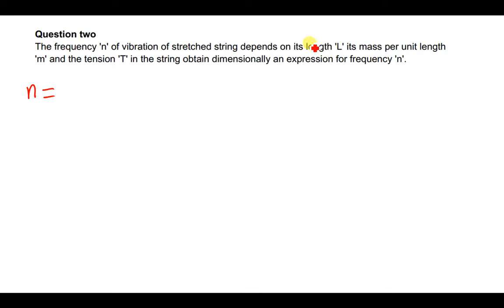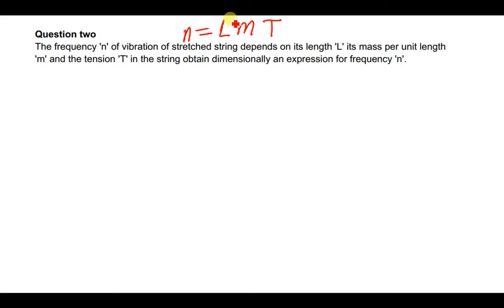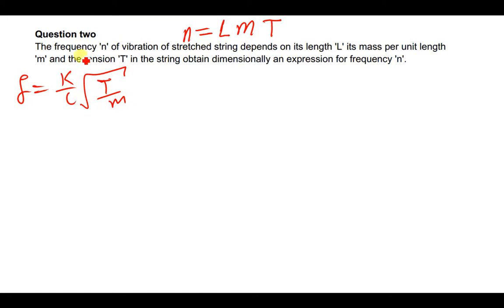They're telling us that n depends on: the length L, the mass per unit length m, and the tension T. We also know that the formula we need to find for frequency is given by k over L times the square root of tension over mass per unit length — that is where we're going with this.